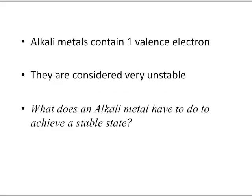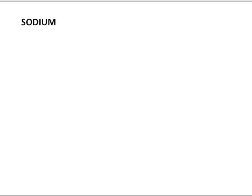Atoms vs. Ions. Alkaline metals contain one valence electron, and they are considered very unstable. What does an alkaline metal have to do to achieve a stable state? That's pretty much going to be the key of this lesson. We're going to be looking at the valence shell and the importance of it being full.